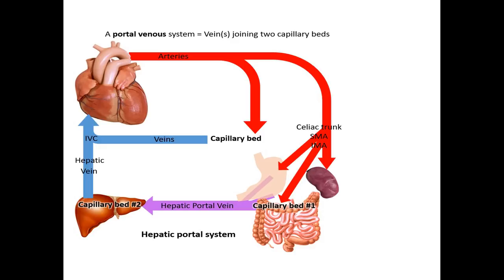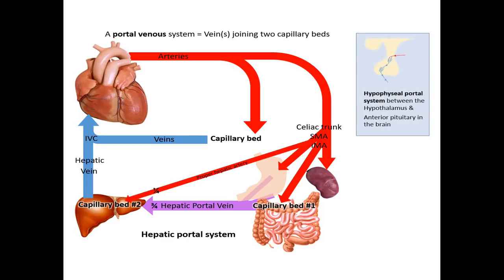The liver receives three quarters of its blood supply from the hepatic portal vein, but this blood is partially deoxygenated from traveling through that first capillary bed. So the liver receives the other quarter of its blood volume and almost half its oxygen from the celiac trunk via the proper hepatic artery. We also have a portal system in the brain between the hypothalamus and the pituitary gland, which is why we must include the word hepatic when we refer to the hepatic portal system.